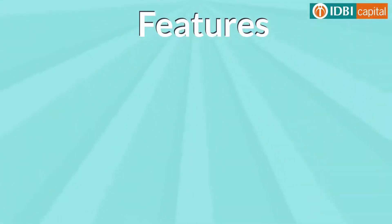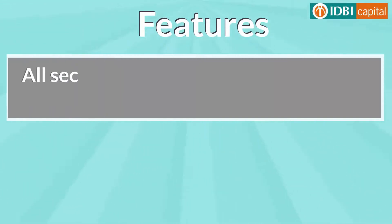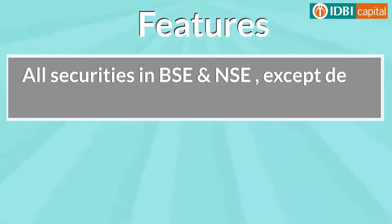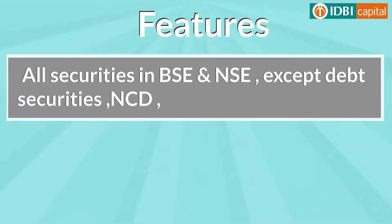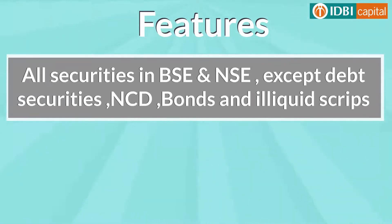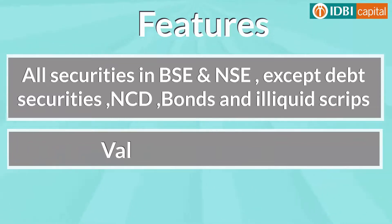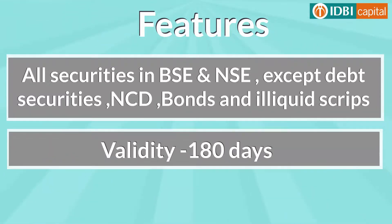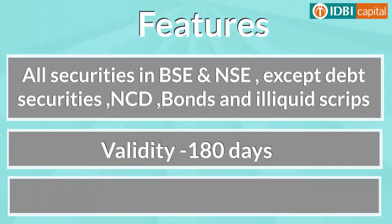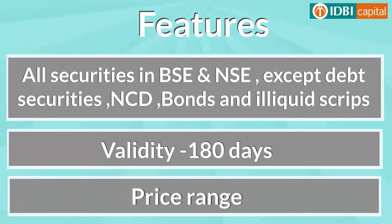GTDT – Available Scripts: All securities in BSE and NSE, except Debt Security, NCD, Bonds, and Illiquid scripts. Validity of the GTDT order is a maximum of 180 calendar days. The price range of the GTDT order should be within the limit prescribed by the exchange on the given day.